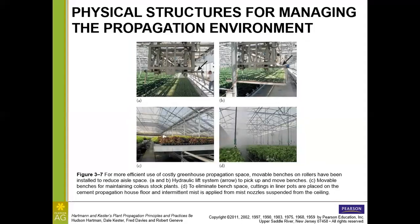Speaking of movable benches, there are also movable bench systems that are automated or use hydraulic lifts. This is the one where they actually have the plants on the propagation house floor. As you can see, there are some overhead nozzles on D providing the intermittent mist. The intermittent mist is going to help to keep the propagation environment humid, and it also potentially has the effect of washing off spores of fungi. This is a little bit controversial because some people say it would promote fungi to have such a wet environment. However, intermittent mist is commonly used in large-scale propagation in greenhouses.